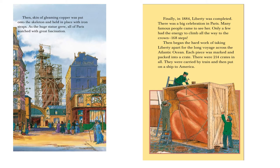Then, a skin of gleaming copper was put onto the skeleton and held in place with iron straps. Copper is a shining metal that was put onto the skeleton and held by iron straps — pieces of iron — to make the gleaming copper stick to the skeleton. As the huge statue grew, all of Paris watched with great fascination. Fascination means amazement or astonishment — they were so surprised and happy to see such a great statue in the city.